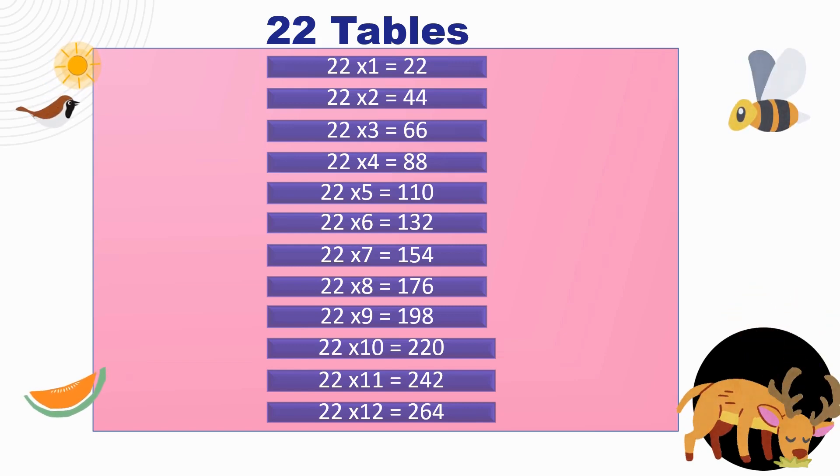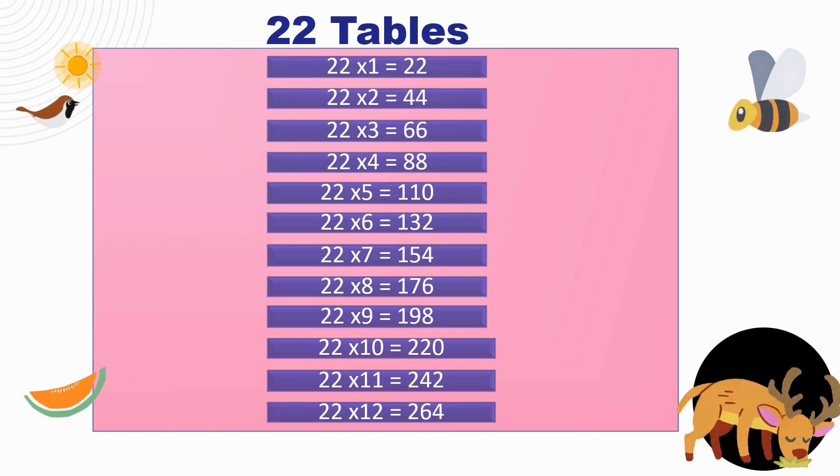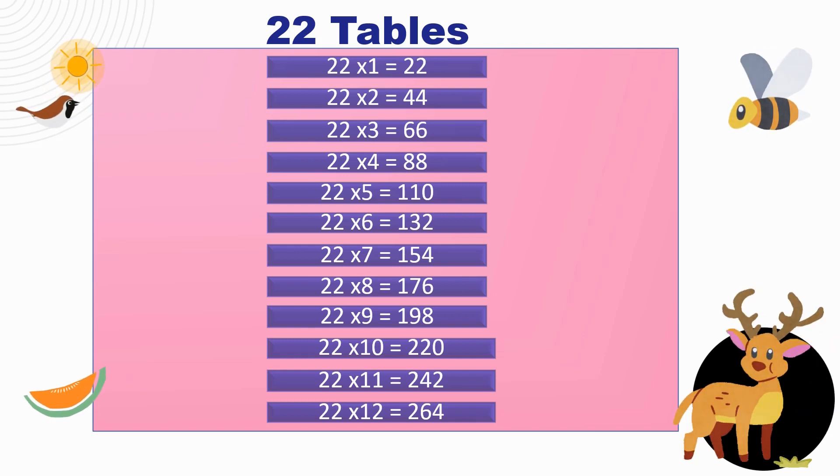22 times 11 is 242, each line is a clue to help you. 22 times 12 is 264, ending the journey with scores galore.